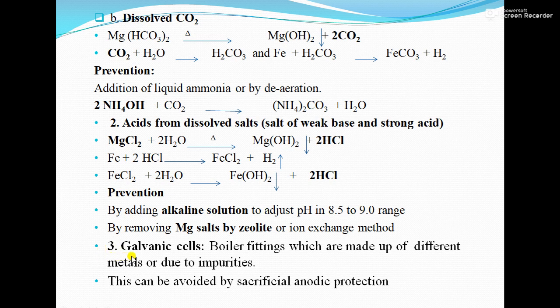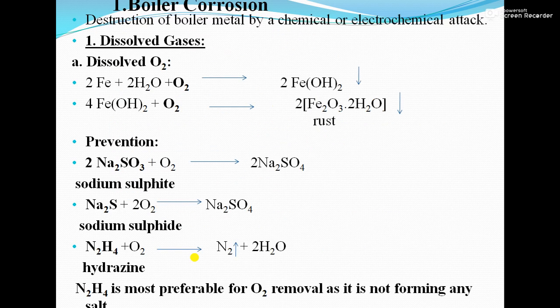The third type is galvanic cell corrosion. In a galvanic cell, there are two electrodes — anode and cathode — with an electrolyte present. The anode gets corroded and the cathode gets protected. This will be discussed in detail in the corrosion unit. That concludes the first part on boiler corrosion.